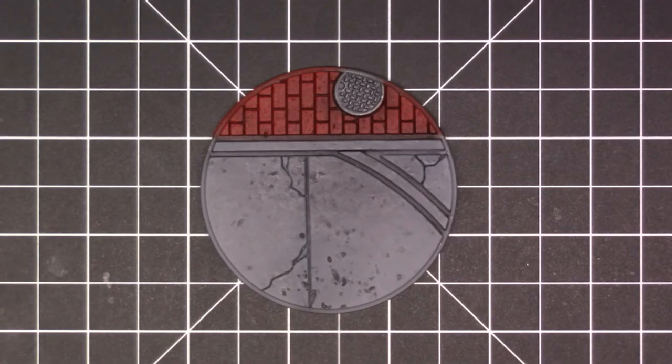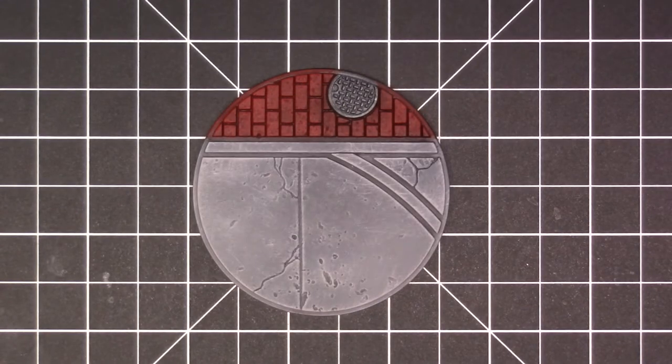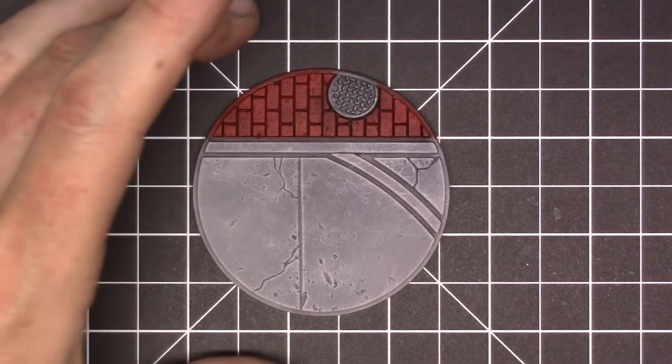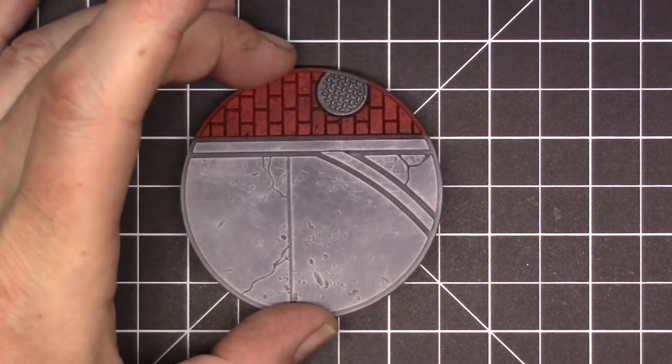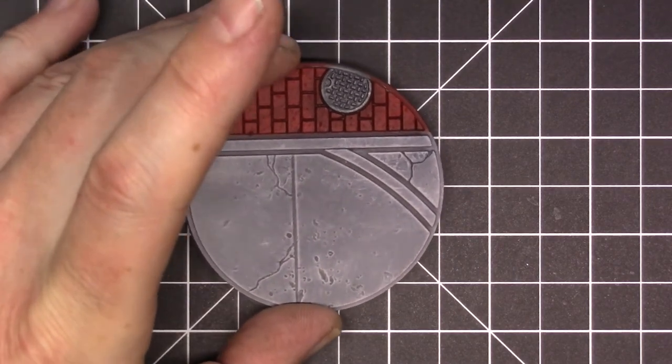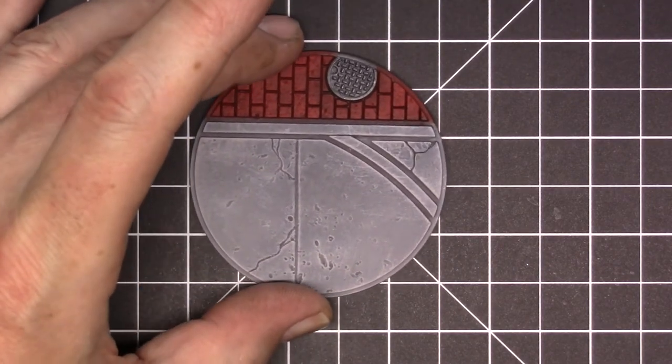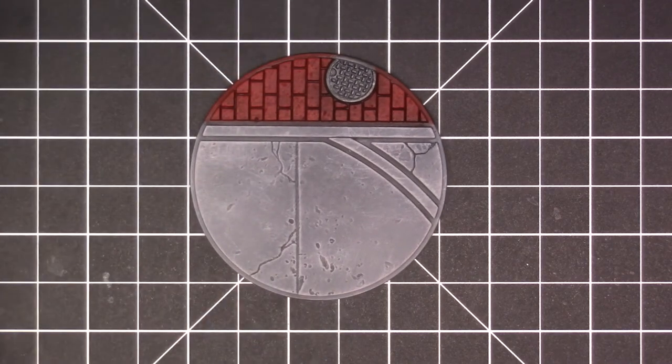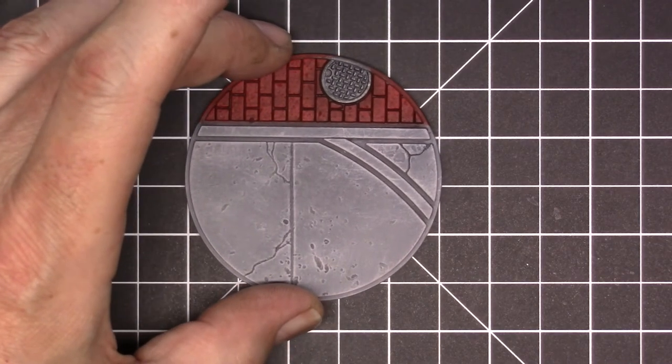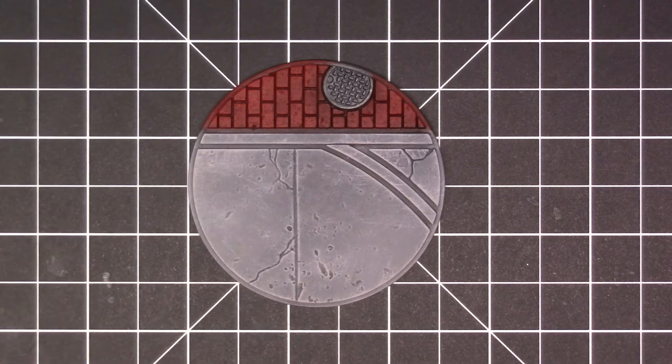Got the dry brushing done there on the street part. I like how it came out, it came out really cool. It does kind of look like concrete or asphalt or some sort of road type thing. I'm going to let this dry completely, then I'm going to do some finishing touches on it and mount him on there.